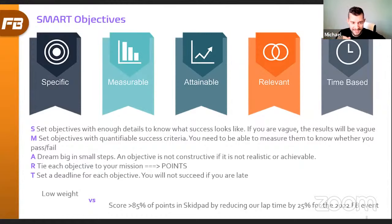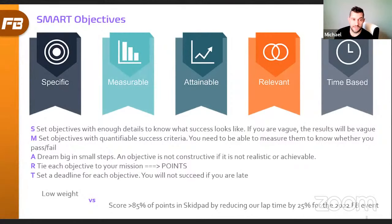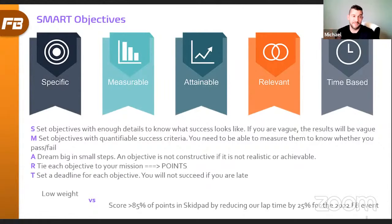Measurable: set objectives with quantifiable success criteria so you can measure whether you pass or fail. If you say 'we want to lose weight in the suspension system,' that's too vague. Someone could lose one gram and call it success. It needs to be measurable: 'we want to lose at least ten kilograms in the suspension system.' Not fifty kilograms, not five — ten, plus or minus one. Because there are many ways to deliver on an objective, write something specific and measurable enough that success matches your vision.